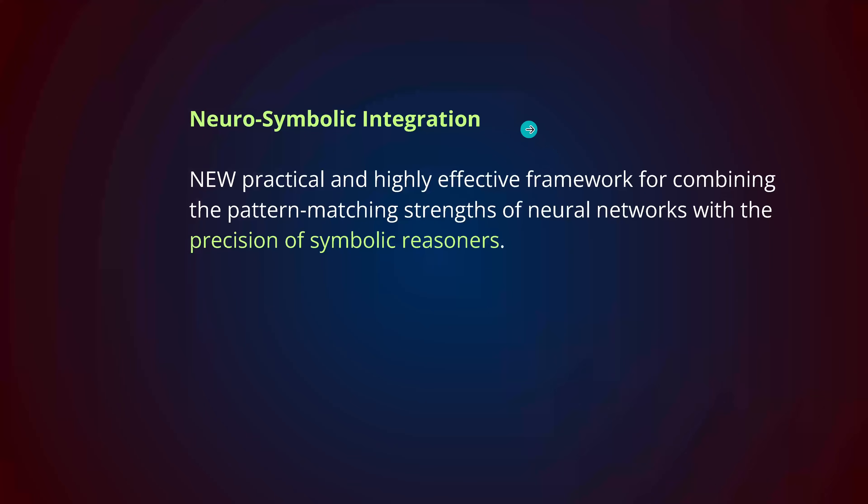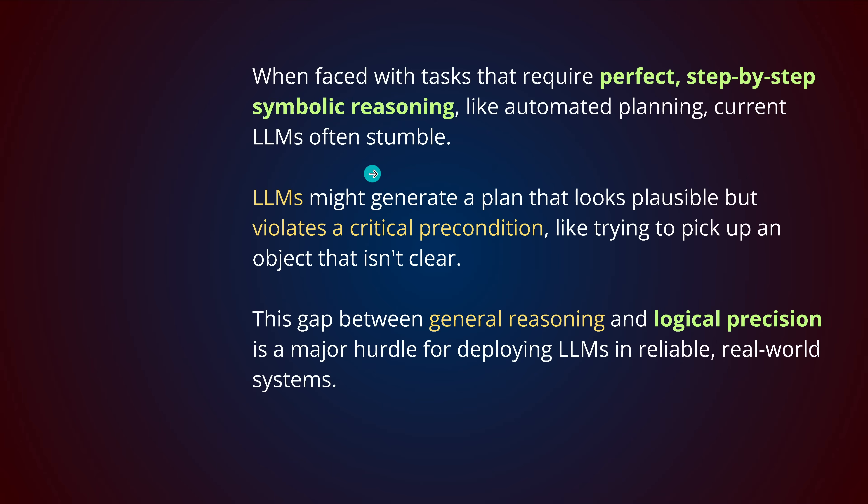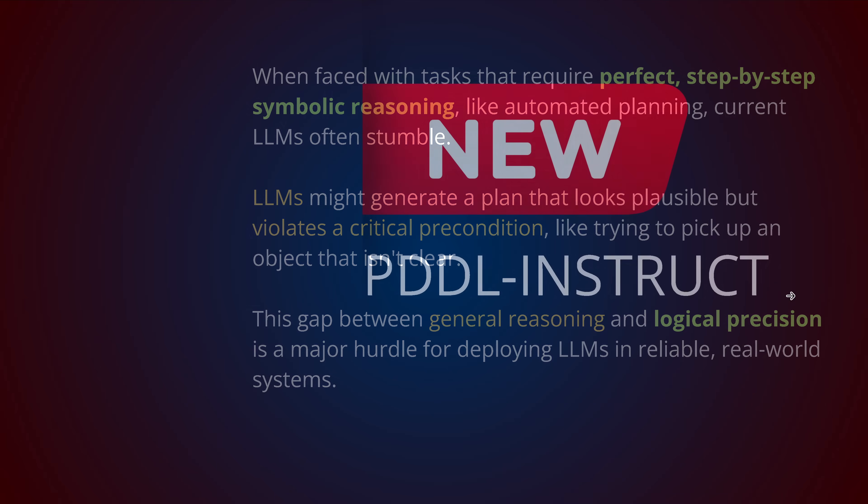What we want is an LLM with a neurosymbolic integration for the absolute precision of symbolic reasoners. Because if we have an LLM it's great, it can do chain-of-thought thinking, but sometimes in this chain it violates your critical preconditions and then we have problems. It is not about just some general reasoning but about logical precision in the reasoning process, and now we have a new solution for this.